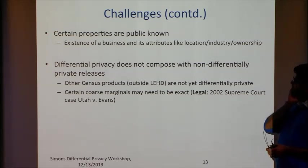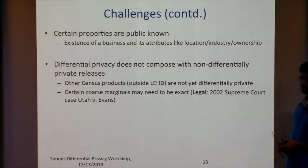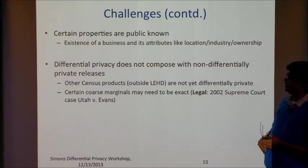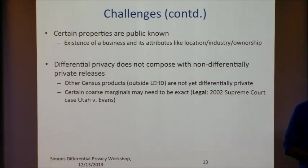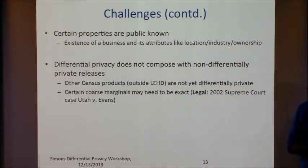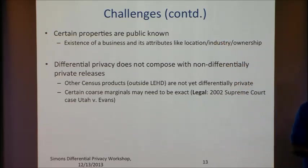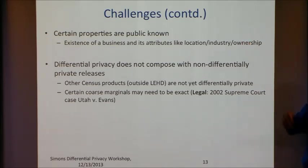Certain properties are actually publicly known and don't need to be protected. For instance, the existence of a business and certain properties like location, industry, and whether it's public or private — it's OK to know that a business of that type exists and that its employment is not zero. That means certain combinations in your domain are structural zeros, not sampling zeros, and you can leverage that. But there are many such rules, and using all of them makes it complicated to reason about what you're protecting and what you're not.